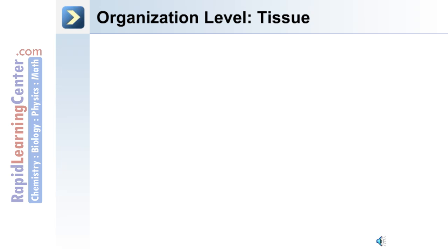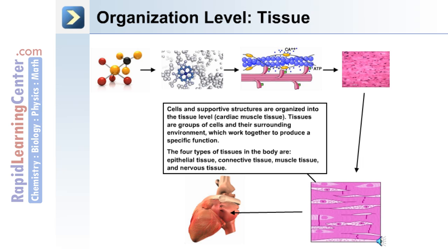Next is the tissue level. Cells and supportive structures are organized into tissues — as in this example of cardiac muscle tissue. Tissues are groups of cells and their surrounding environment which work together to produce a specific function. There are four main types of tissues in humans: epithelial, connective, muscle, and nervous tissue.